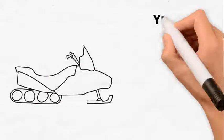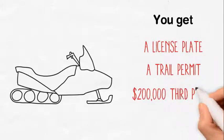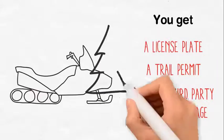When you register your snowmobile, you get a license plate, a trail permit, and $200,000 third-party liability coverage. That's it.